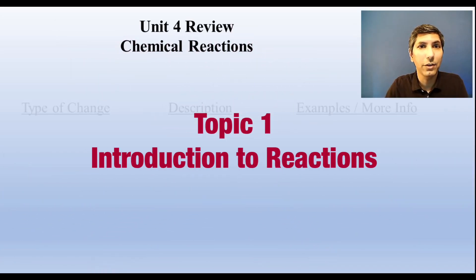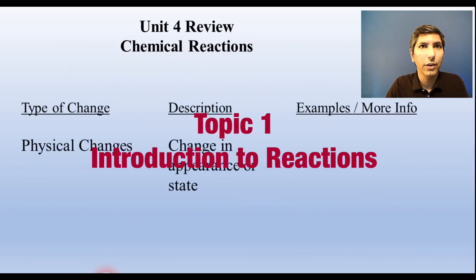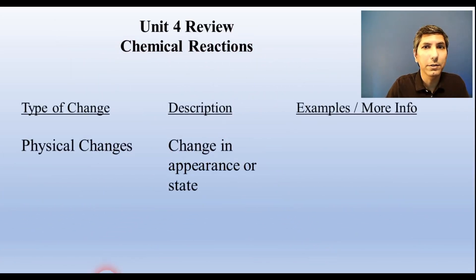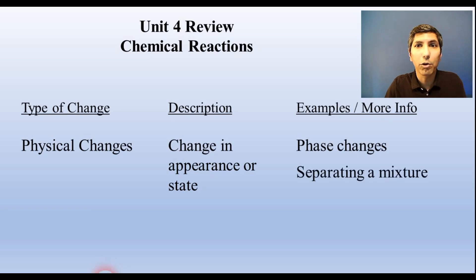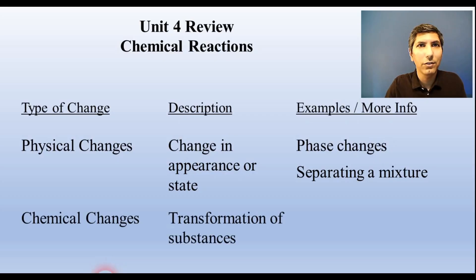There are two main types of changes. Physical changes involve the change in an object's appearance or its state. Phase changes like melting and boiling are physical changes. Any time you separate a mixture, maybe by chromatography or distillation, that's a physical change. On the other hand, chemical changes involve the transformation of one or more substances into new substances. Chemical bonds are broken and formed in these chemical changes or reactions.